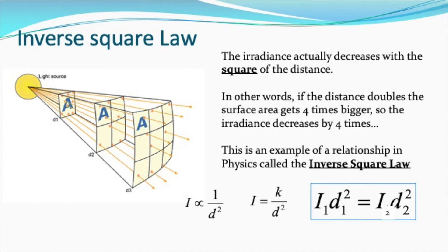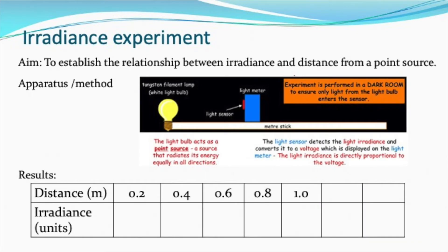We're going to do a little experiment to see if we can verify that relationship. Here's the demo: we're going to set up a small light bulb which will be our point source, and we're going to measure the irradiance that we detect from it at various distances—0.2, 0.4, 0.6, 0.8, and 1 meter away from it—which we'll measure with a meter stick.